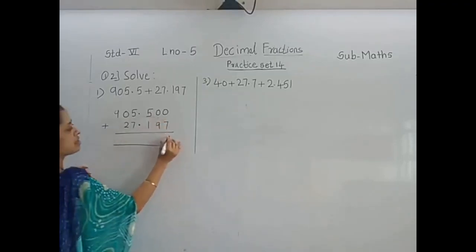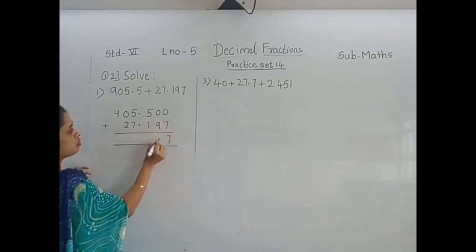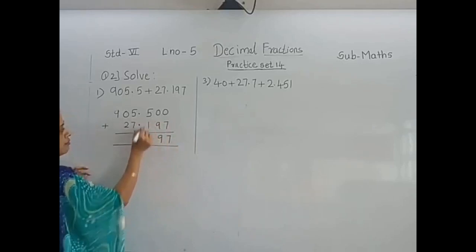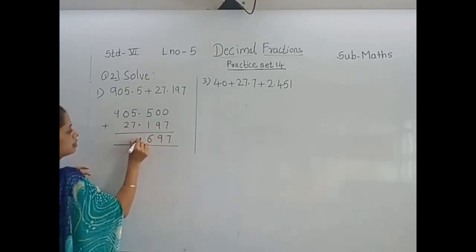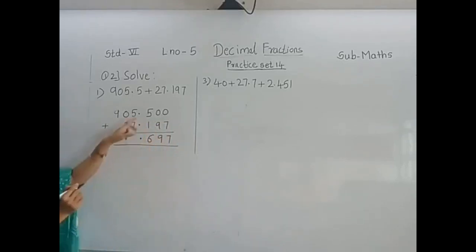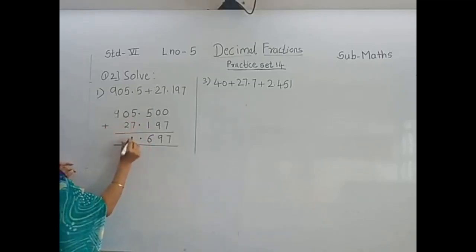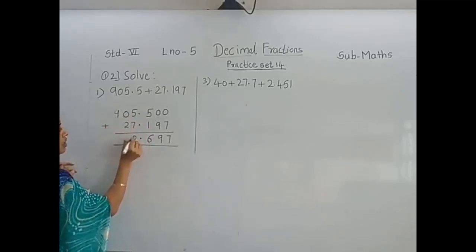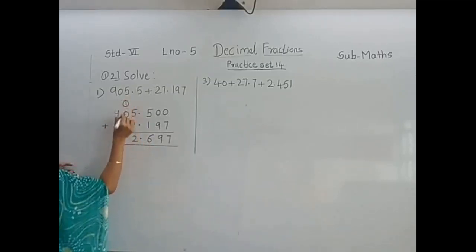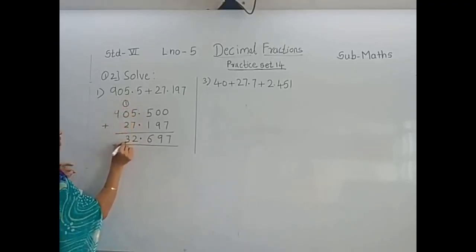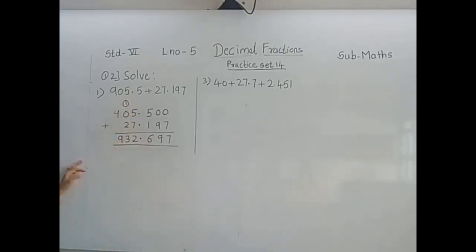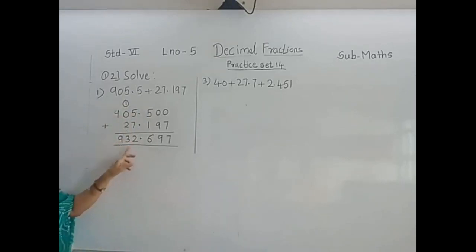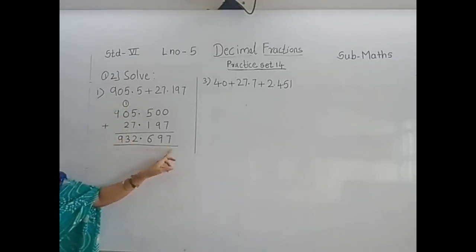Always start addition from the right side. 0 plus 7 is 7. 0 plus 9 is 9. 5 plus 1 is 6. Put the decimal point below the decimal point. 5 plus 7 is 12 — carry 1. 1 plus 2 is 3, and 9. So the sum is 932.697.